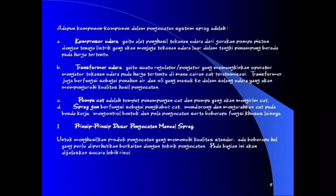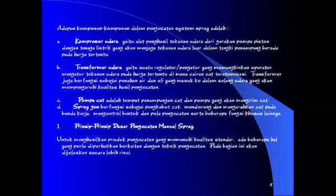Komponen-komponen dalam pengecatan sistem spray: kompresor udara adalah alat penghasil tekanan udara dari gerakan pompa piston dengan tenaga listrik yang akan menjaga tekanan udara dalam tangki penampung berada pada harga tertentu. Transformer udara yaitu suatu regulator atau pengatur yang memungkinkan operator mengatur tekanan udara pada harga tertentu di mana cairan cat teratomisasi. Transformer juga berfungsi sebagai penahan air dan oli yang masuk ke dalam selang udara yang akan mempengaruhi kualitas hasil pengecatan.